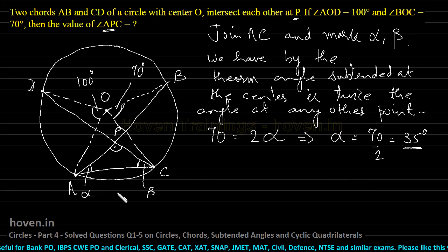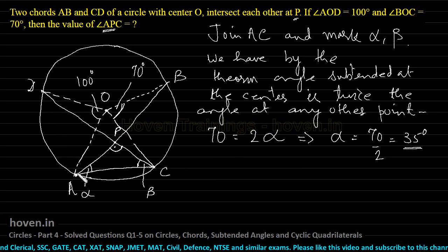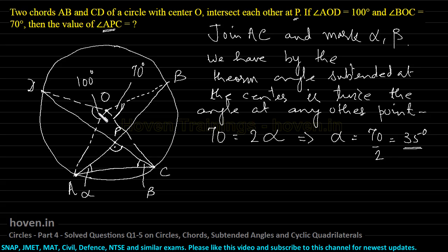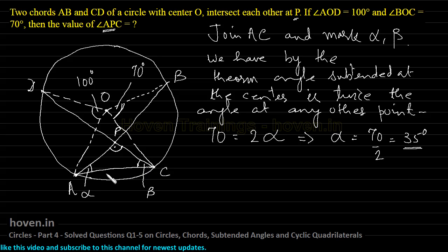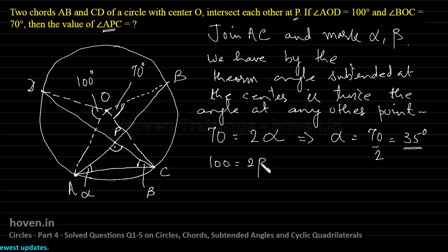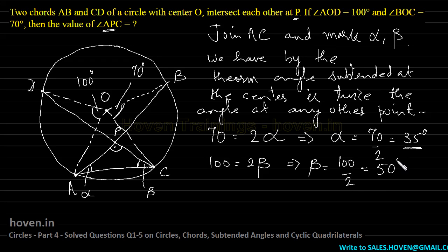Now I will apply the same logic to arc DA. Observe arc DA — it is subtending 100 degrees at the center. The same arc DA is subtending angle beta with the help of point C on the periphery of the same circle. So, beta and 100 are related as 100 should be equal to 2 times beta, which implies beta should be equal to 100 divided by 2, equal to 50 degrees.